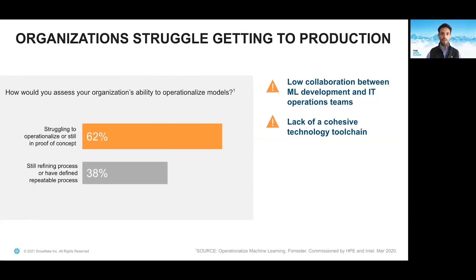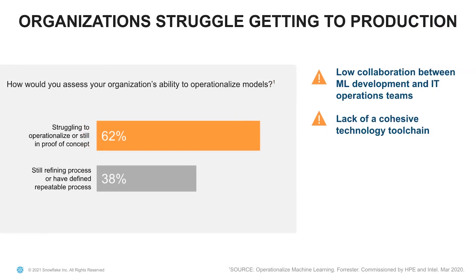Running from prototype to production is also a challenge. While it's an ideal stage where every organization wants to be to get value from models, a Forrester study found that 62% of organizations interviewed failed to deploy any models into production. They identified low collaboration between development and operations teams, lack of cohesive technology, and lack of AI skills as key barriers. Organizations need to close the skills, technology, and operations gaps to run machine learning in a repeatable, secure, and cost-effective manner.